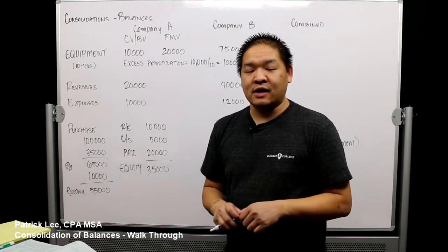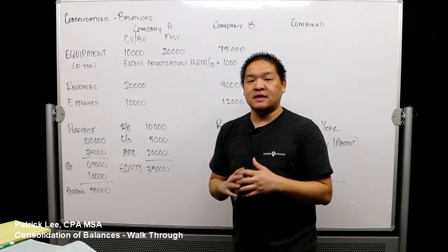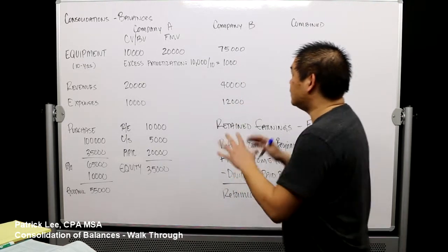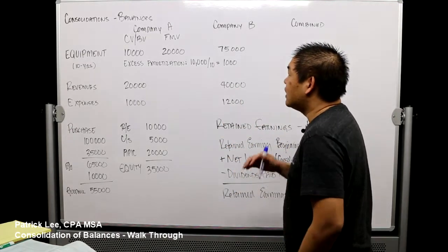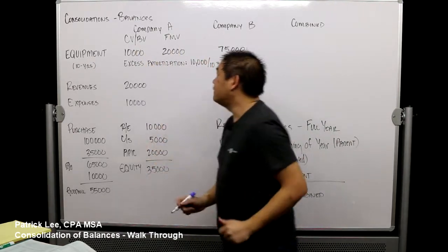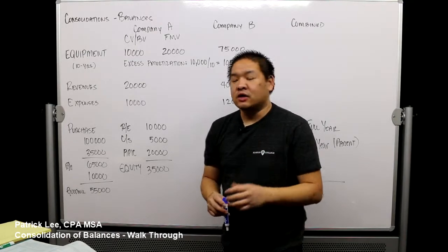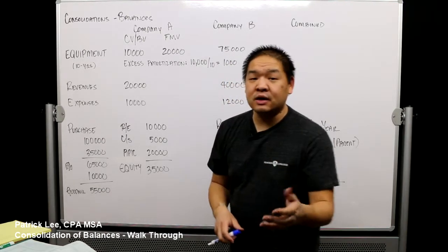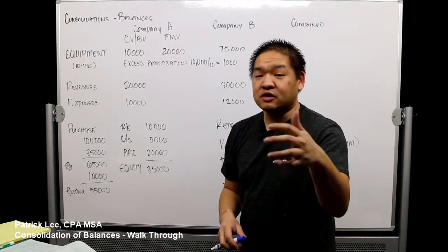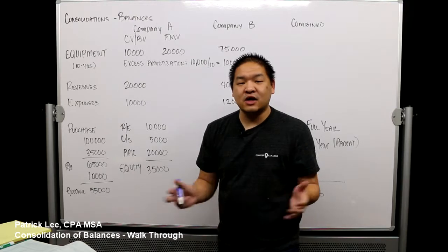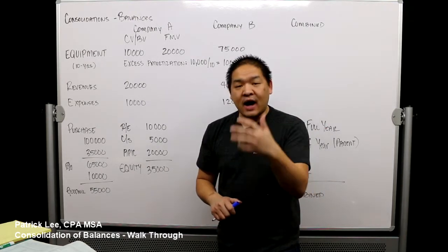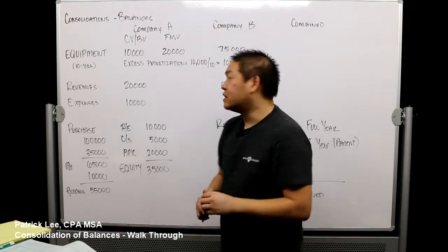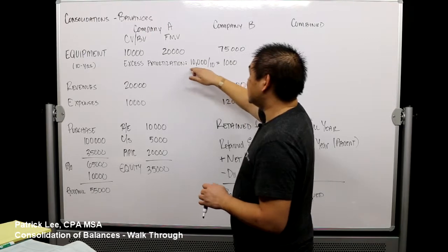The first thing we have to talk about is consolidating balances and how do we consolidate balances when we have a situation where we've stepped up the basis. I'll walk you through one example here — equipment. Let's assume we are company B. We acquired company A and when we acquired them they had a book value of equipment at $10,000. After we assessed all of the equipment we noticed that the fair market value should have been $20,000.